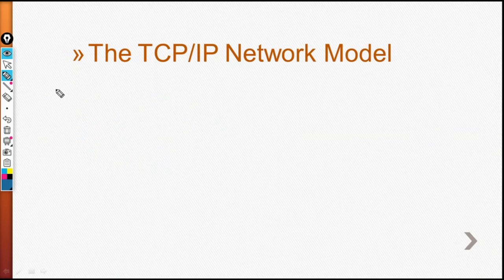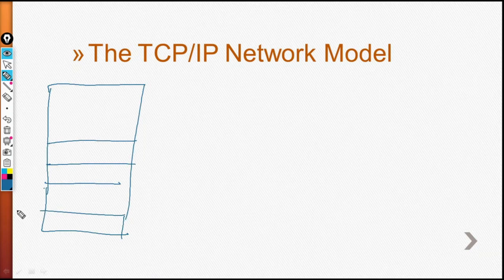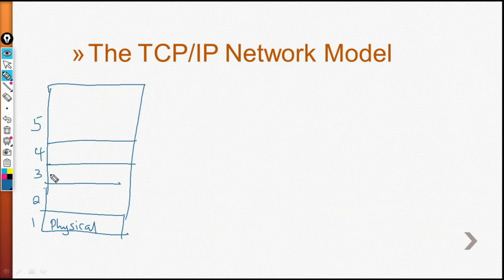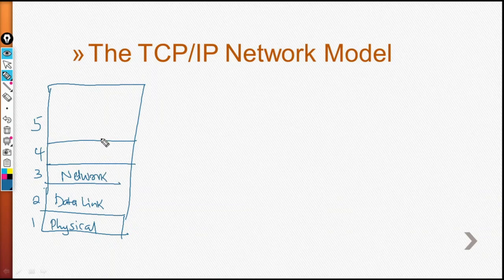The TCP/IP model has five layers. The first layer is the physical layer. We have the data link layer, the network layer, the transport layer, and the last one, which is the application layer.